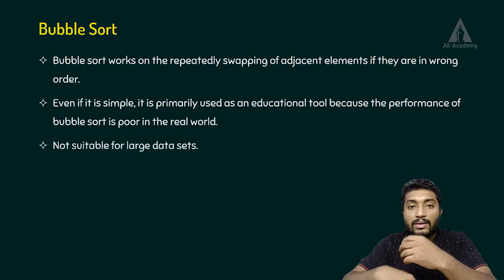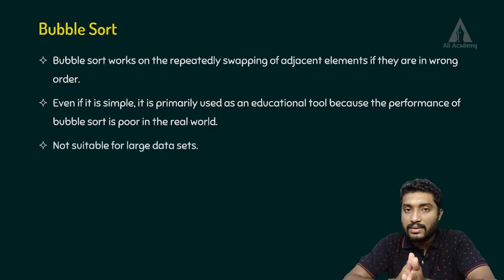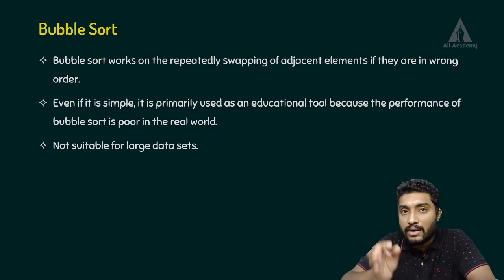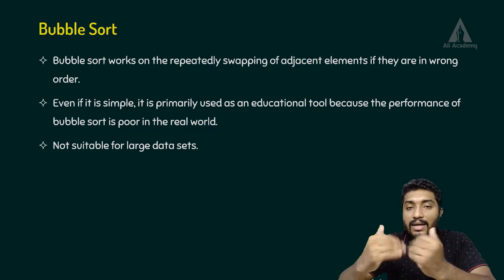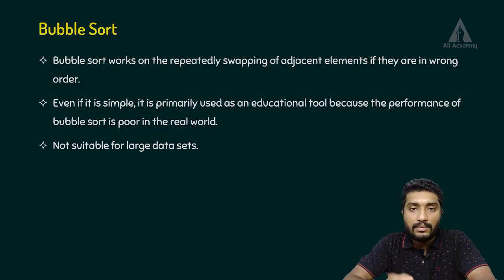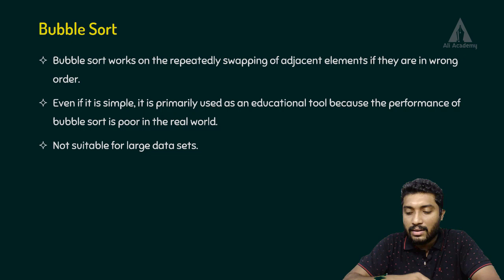Because it requires more iterations to sort, it is not suitable for large datasets. For example, applying bubble sorting to a large dataset like Facebook's data would not be advantageous — it is simply not suitable.